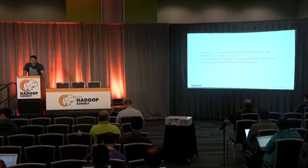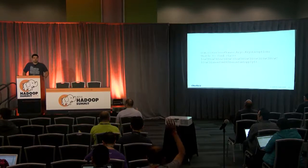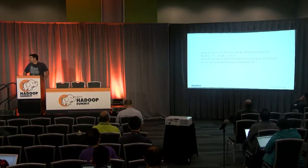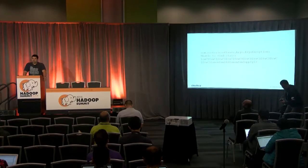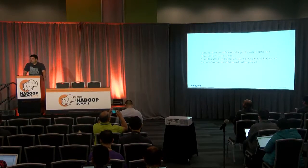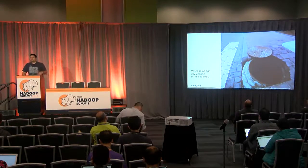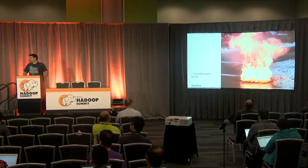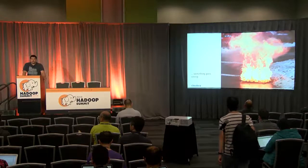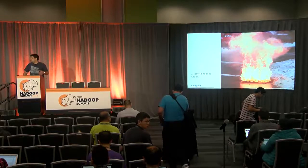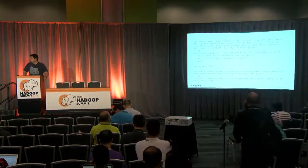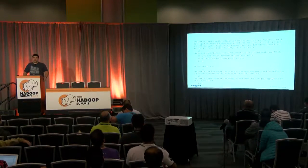So who here has written Spark before? Any Spark-like programs? Who's seen error messages like this? Seems to be a one-to-one mapping there. In this talk we're going to explore some error conditions in Spark, similar to walking down the street over manholes — you don't really think about them until something really bad happens.